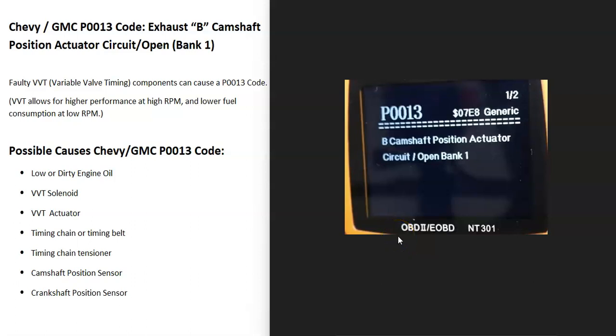Today I'm talking about a Chevy or GMC P0013 code — what it is and how you go about fixing it. A P0013 code is an exhaust B camshaft position actuator circuit open, bank one.